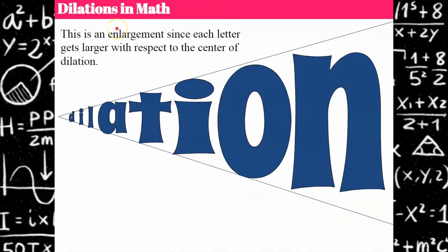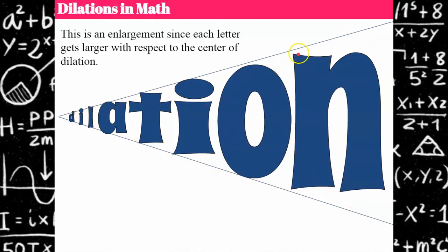Now let's talk about dilations in math. This is an example of a dilation, since each letter is getting larger with respect to the center. If I call this the center of dilation and draw lines out, everything should grow within that range. You can see these letters have borders and you can see it enlarging.